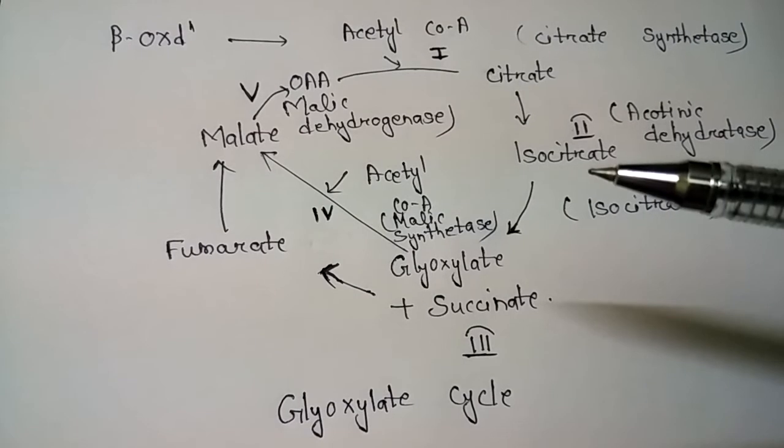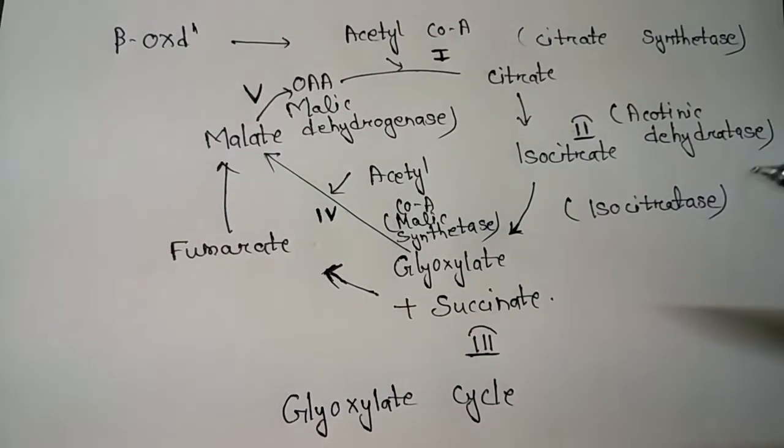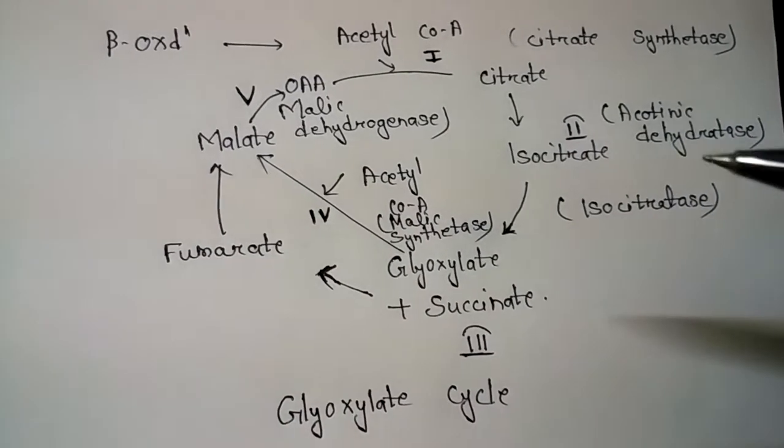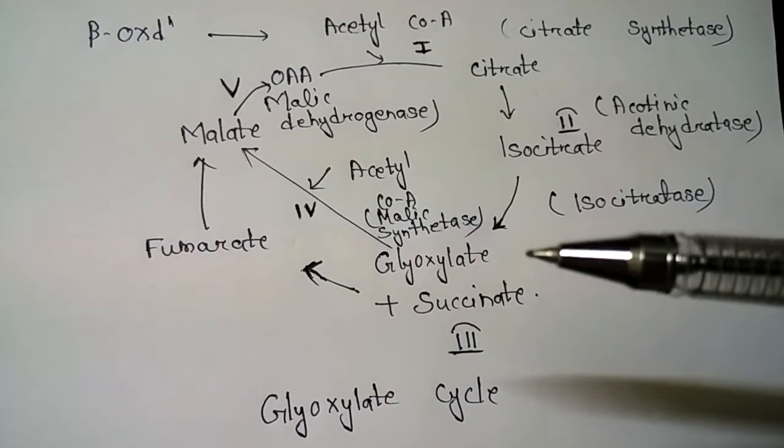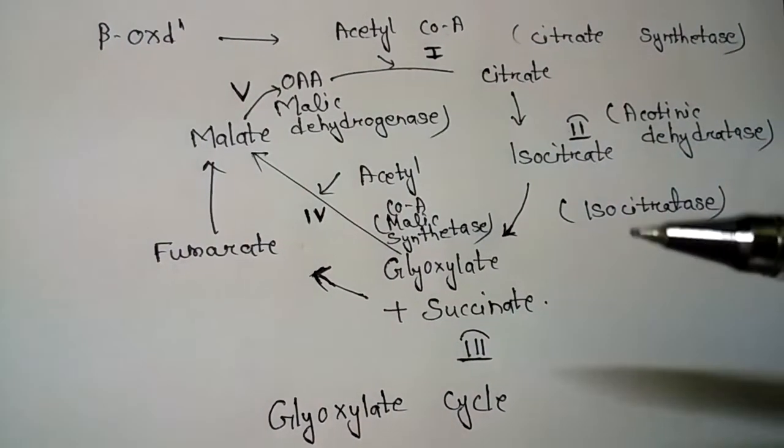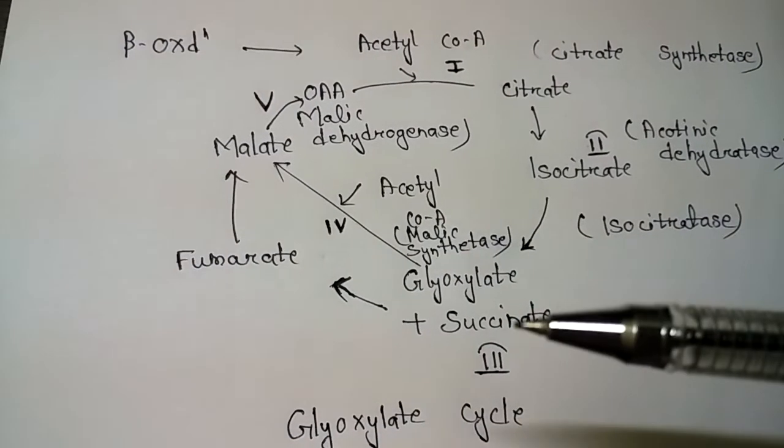Then comes the actual reaction of the glyoxylate cycle. Here, the isocitrate is cleaved into glyoxylate and succinate.